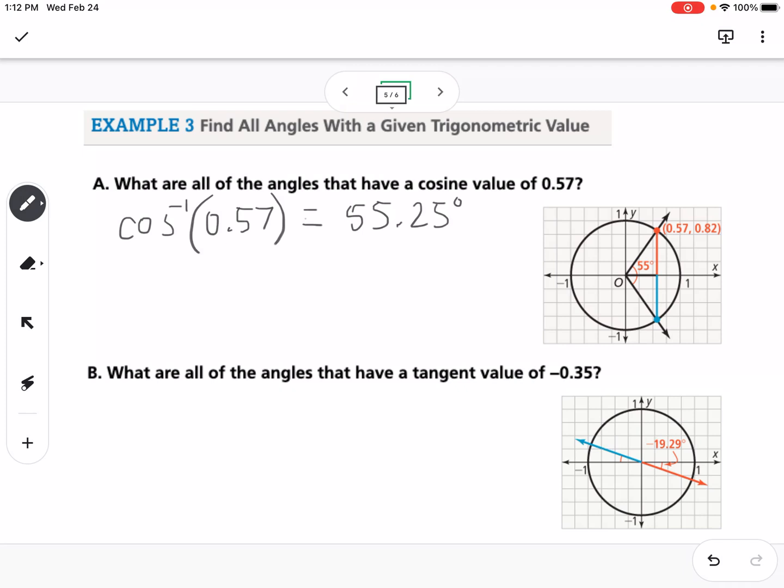So we have 55.25 degrees. For every trig value that is not on the x or y axis, we're going to have two angles that have the same cosine value. So the way we think of that is this value of cosine is positive. So we know that cosine is positive in the first quadrant. That's where our 55.25 degrees lands.